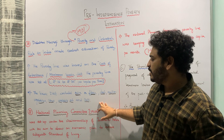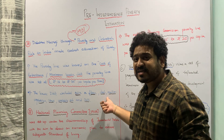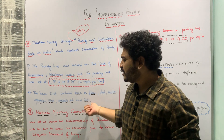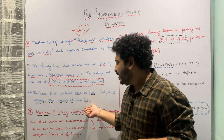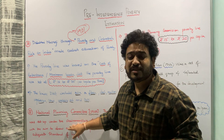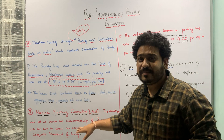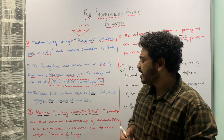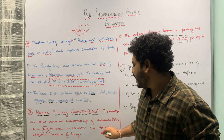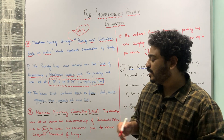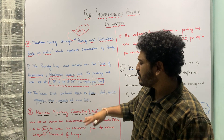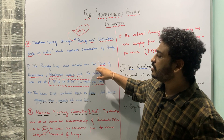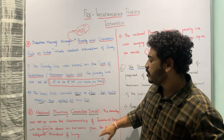Let us now move to the National Planning Committee, which was set up in 1938. This committee was set up by Netaji Subhash Chandra Bose under the chairmanship of Jawaharlal Nehru. The aim of the committee was to look at an economic plan to ensure adequate standard of living in India. So from minimum cost of subsistence, we are moving towards something called adequate standard of living.